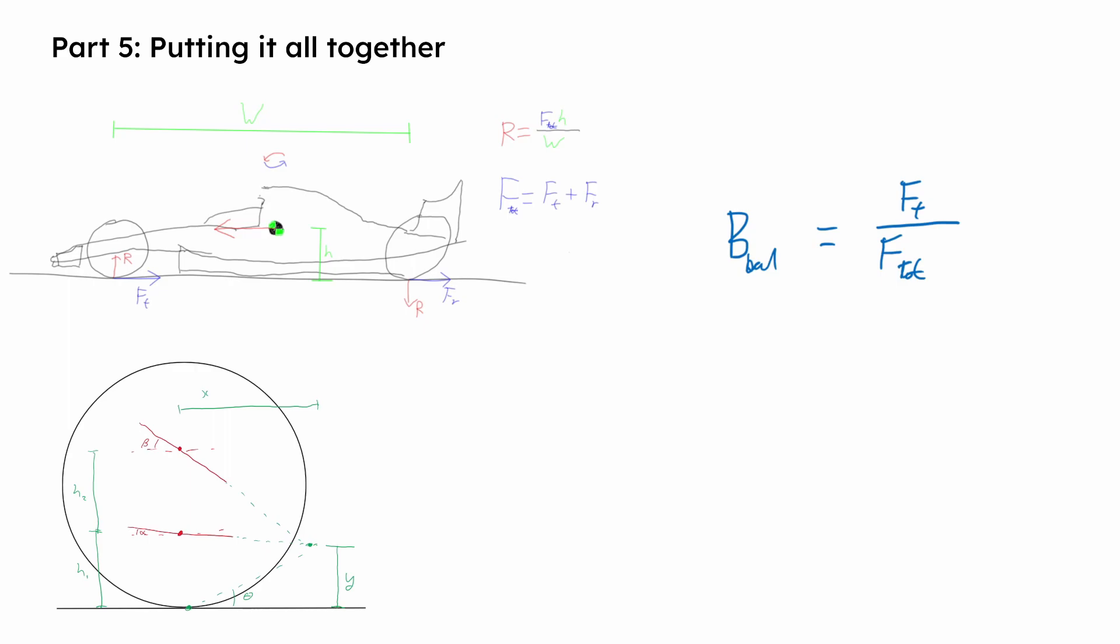Brake balance, or sometimes referred to as brake bias, is the proportion of braking that is done through the front axle. It is usually expressed as a percent, however for these calculations, remember to convert to a decimal.